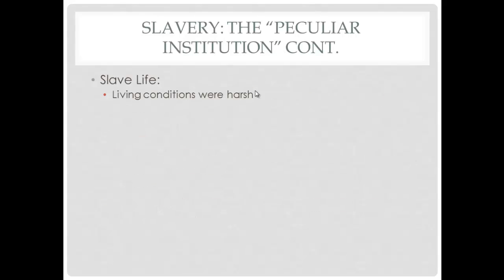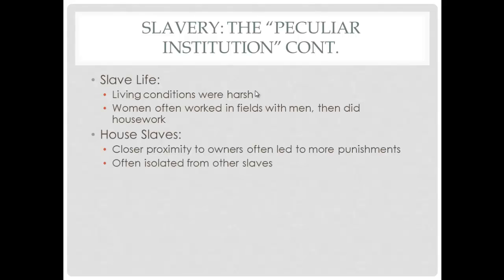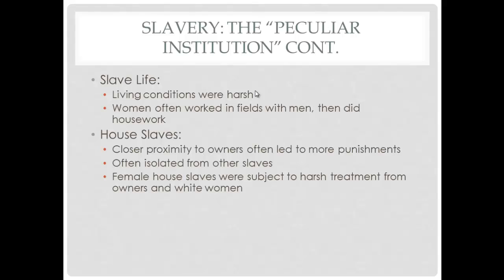Slave life: living conditions were incredibly harsh. Women often worked in the fields with men during the day, then returned home to do housework — cleaning and cooking — so female slaves often had it harder than men. House slaves may have had less physical work but lived in closer proximity to owners, which often led to more punishments. They were isolated from other slaves, and female house slaves faced harsh treatment from both owners and jealous wives.